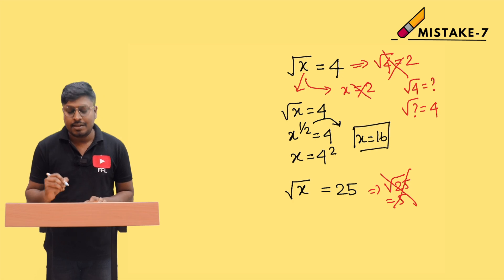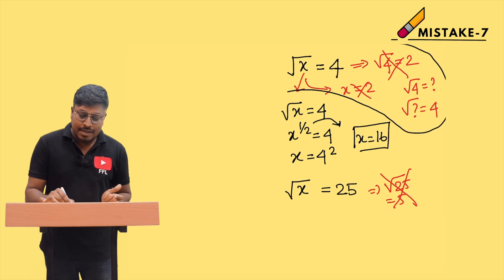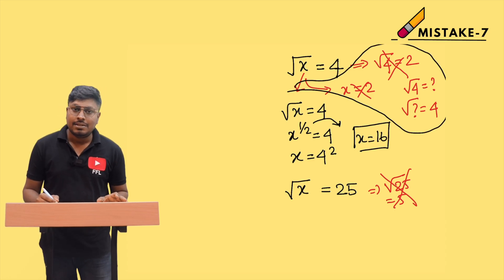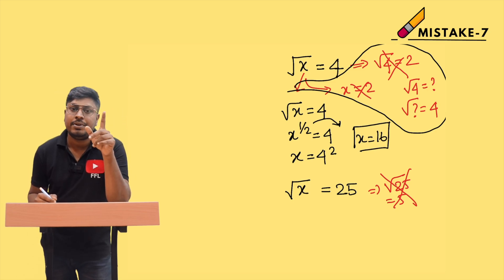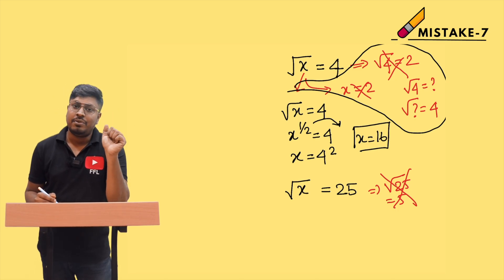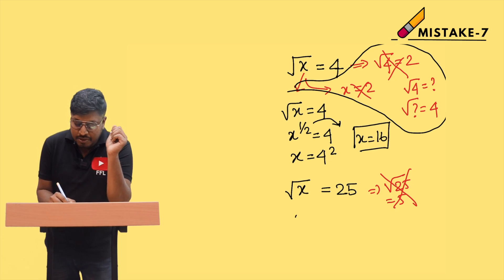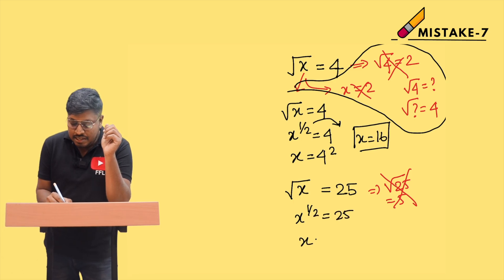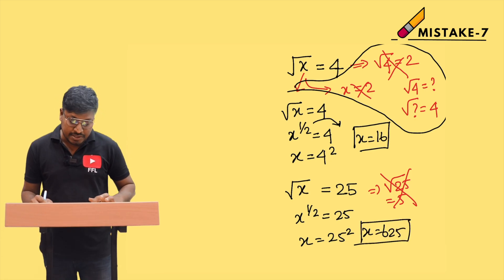So x equals 4 squared, which gives x equals 16. That is the answer. Similarly, for square root of x equals 25: write it as x to the power 1/2 equals 25, then x equals 25 squared, so x equals 625.